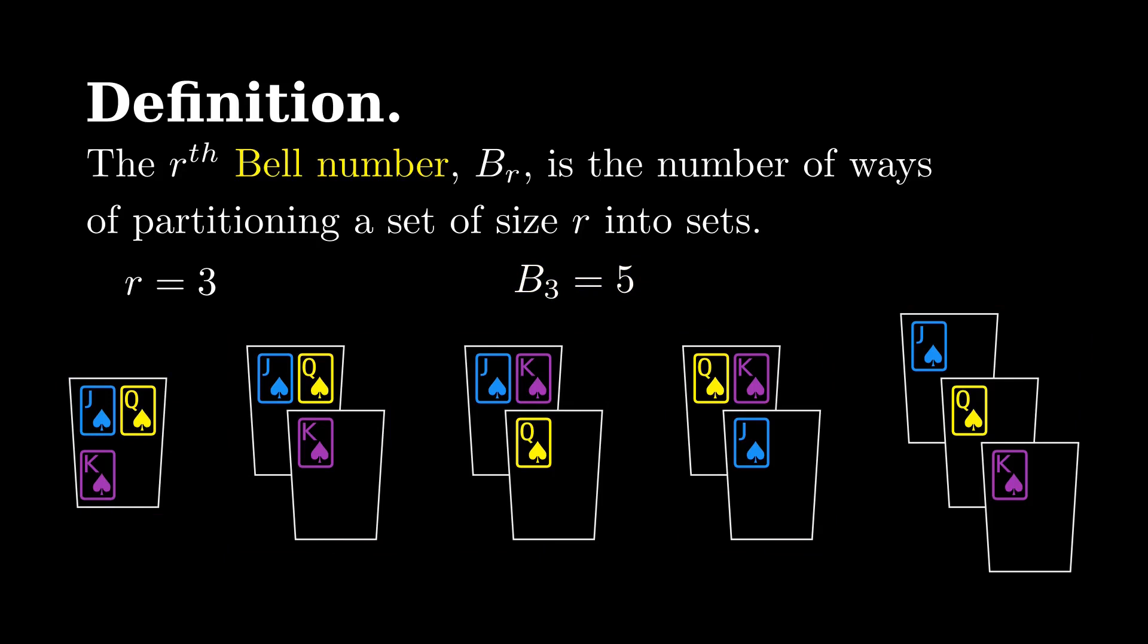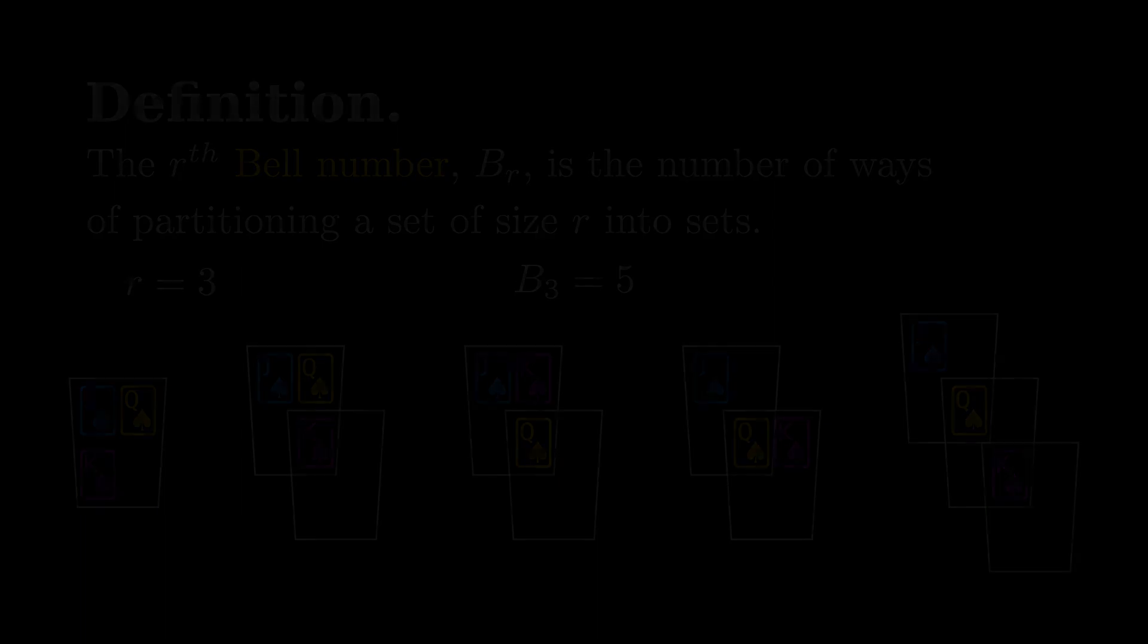Notice that the bags themselves are interchangeable, so putting prizes 2 and 3 into bag 1 and prize 1 into bag 2 is considered the same as putting prize 1 into bag 1 and prizes 2 and 3 into bag 2. That means when necessary, we can order the bags by the smallest prize in them. From here on out, we will always put the bags in this order.